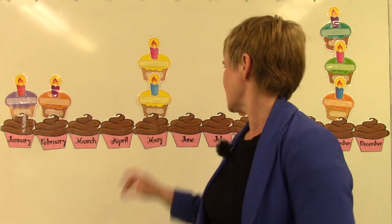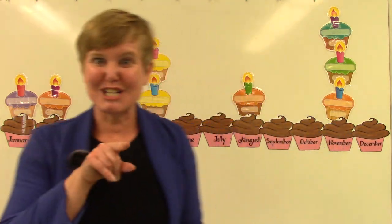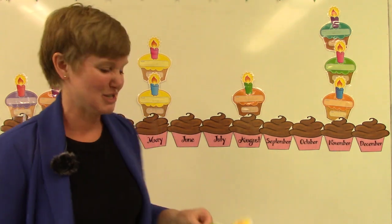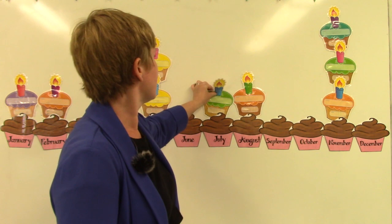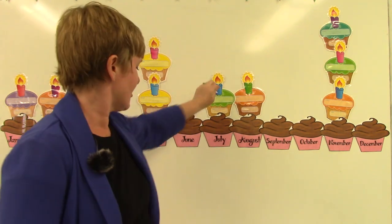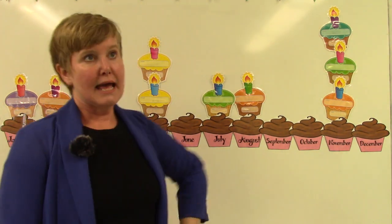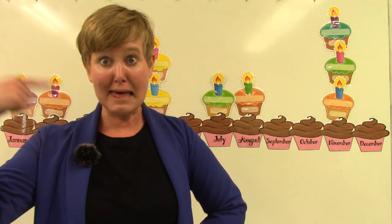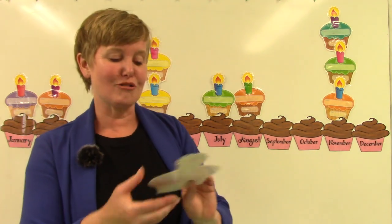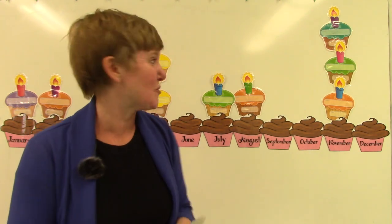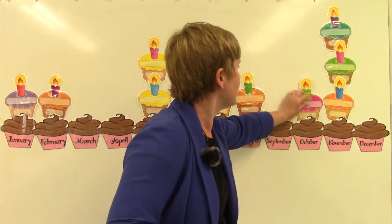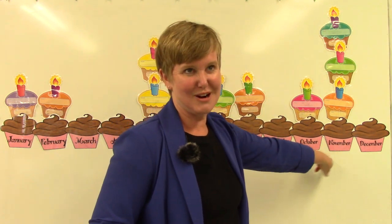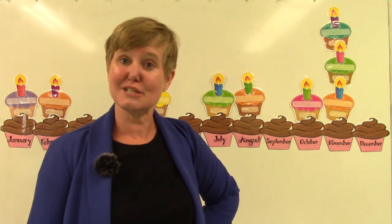No one in my house has a birthday in June, but July is my son Jonathan's birthday, so I am going to put a cupcake for July. There's only one more person in my house and that is me, and my birthday is in October, so I am going to put another cupcake in October. I already did November and there are no birthdays in our house in December.